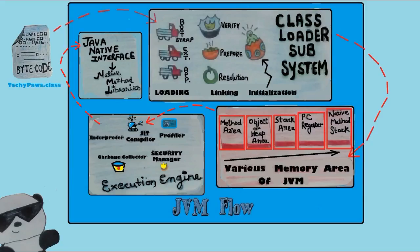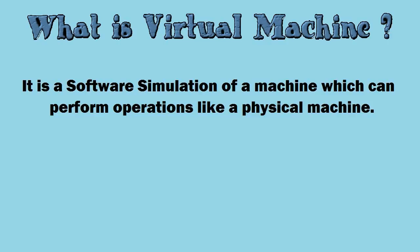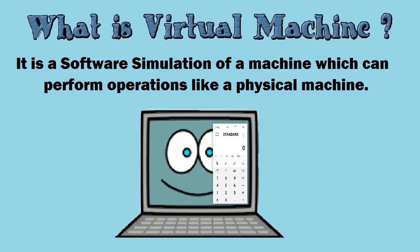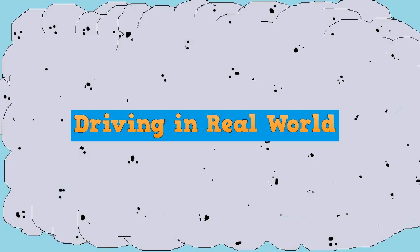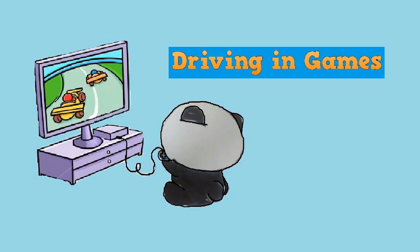Today we are going to see the complete JVM architecture. JVM is basically a virtual machine. A virtual machine is a software simulation of a machine which can perform operations just like a physical machine. For example, a calculator in the real world and a calculator on a PC or mobile both do the same work, but one exists physically and another exists virtually.